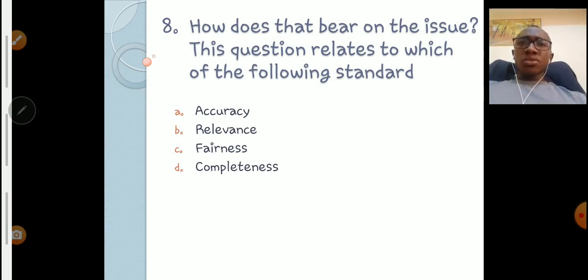We talked about the standards of critical thinking. We looked at a lot of them, and under each standard we ask some questions. So if in an argument you ask this question: How does that bear on the issue? This question relates to which of the following standards - accuracy, relevance, fairness, or completeness? Yes, you are right, it's relevance. You want to know if what the speaker is saying is related to the topic and the discussion. So that makes B the answer. I hope you are taking note of all the answers - you might meet some of them in your end of semester or mid semester exam.